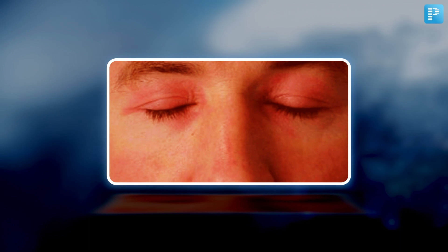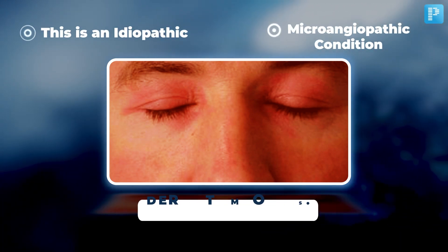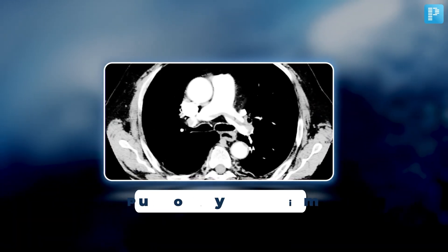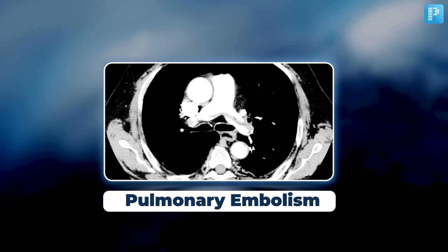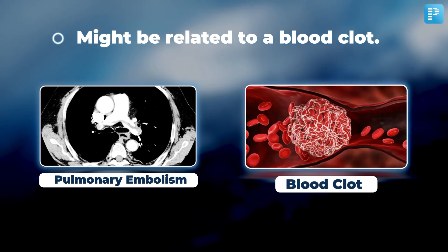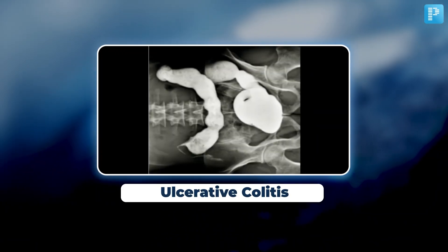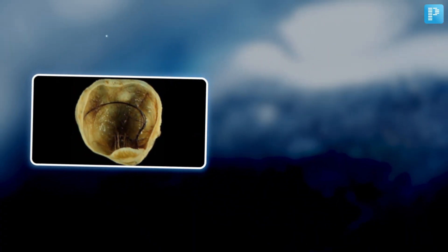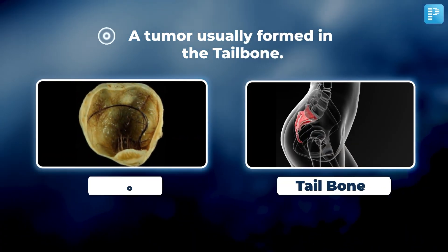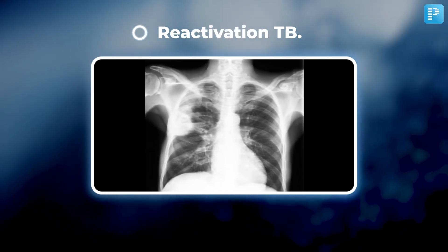Let's look at the first image. This is an idiopathic microangiopathic condition — we are talking about Dermatomyositis. The next image shows a CT scan of pulmonary embolism, which might be related to a blood clot. With that hint, this should be an easy one. The third X-ray is a case of ulcerative colitis. Moving on, we have a tumour usually formed in the tailbone, referred to as teratoma. The next X-ray shows a case of reactivation TB.